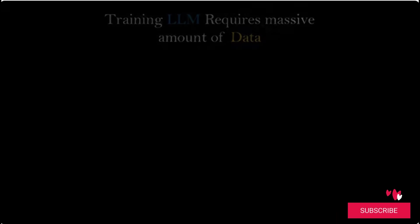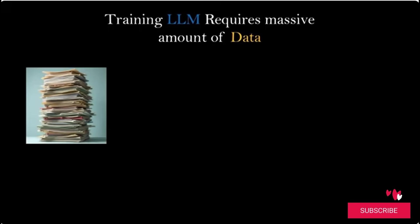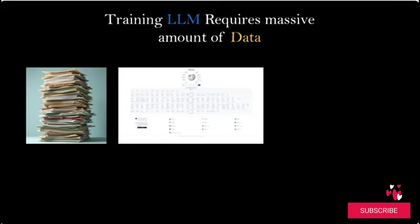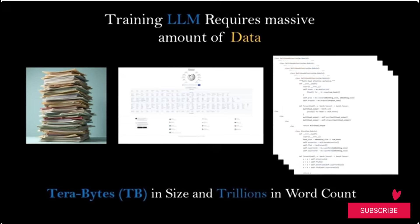So in order for the model to correctly predict the most likely next word, it must be trained on a massive amount of data. This includes all kinds of books, documents, articles, newspapers, journals, the entire internet, all coding text, and much more. This dataset is terabytes in size and contains trillions of words.